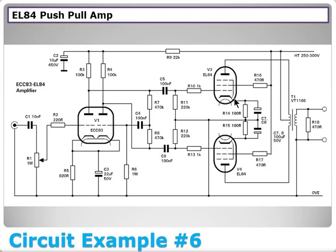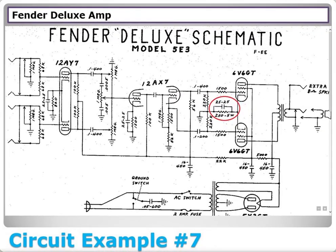The two EL84 plate outputs feed into the output transformer, which reassembles the signal. Notably, each output tube cathode has its own separate 180Ω resistor to ground with cathode bypass capacitors in parallel, providing independent bias for each tube — a cleaner design than a shared cathode resistor.